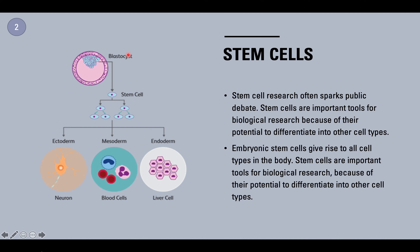Embryonic stem cells give rise to all cell types in the body. Stem cells are important tools for biological research because of their potential to differentiate. If we pulled cells from an adult — cells for their heart, lungs, stomach, blood — those cells are already what they're meant to be and are not going to change. But blastocyst cells, these young stem cells, can be turned into any type of cell for biomedical research: ectoderm such as a neuron in the brain, mesoderm such as blood cells, or endoderm such as liver cells. Stem cells are important for research but can be a public debate topic.